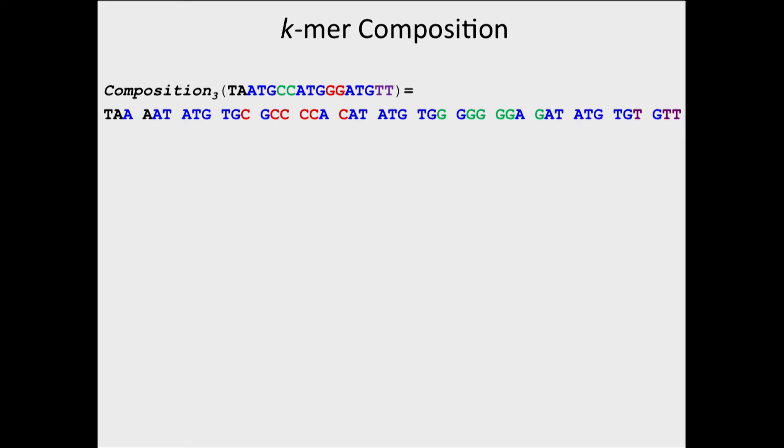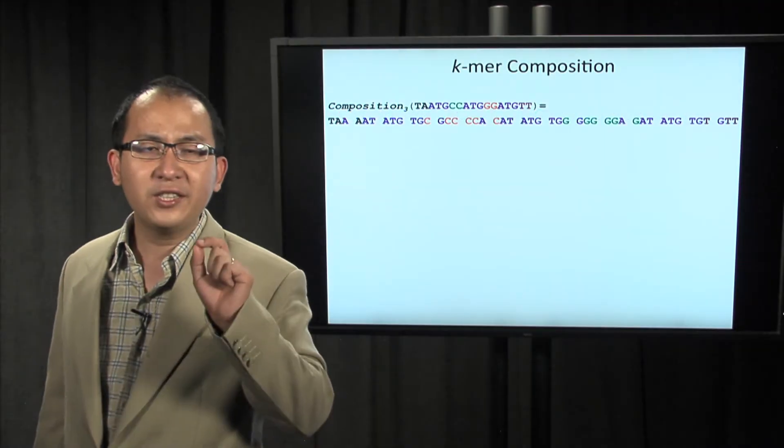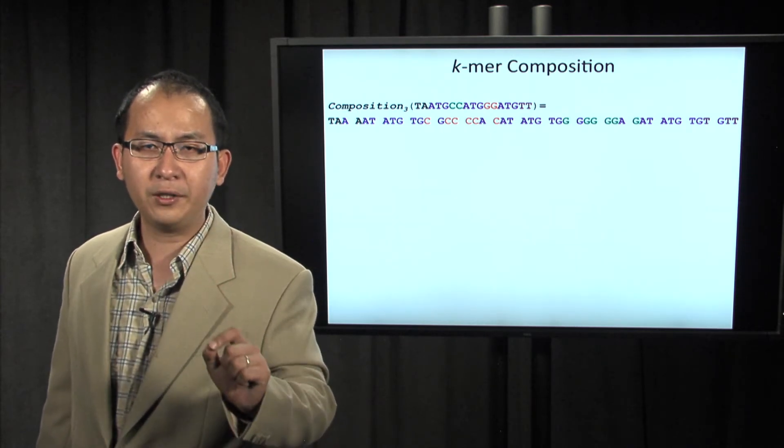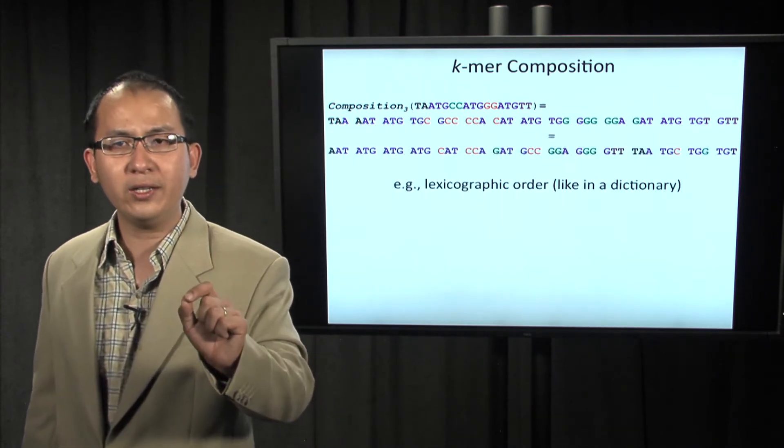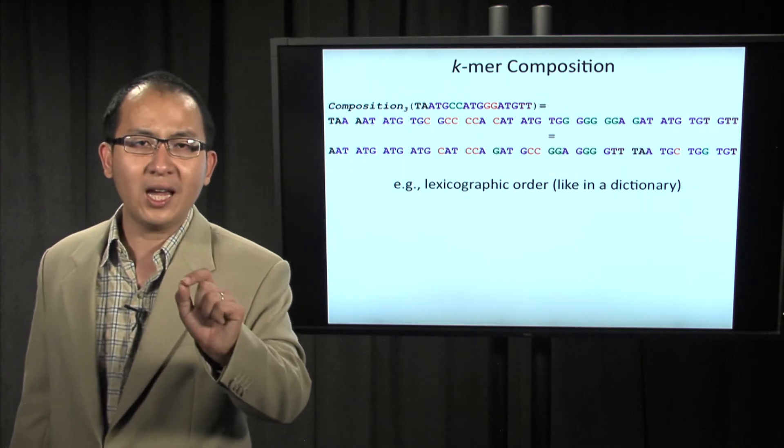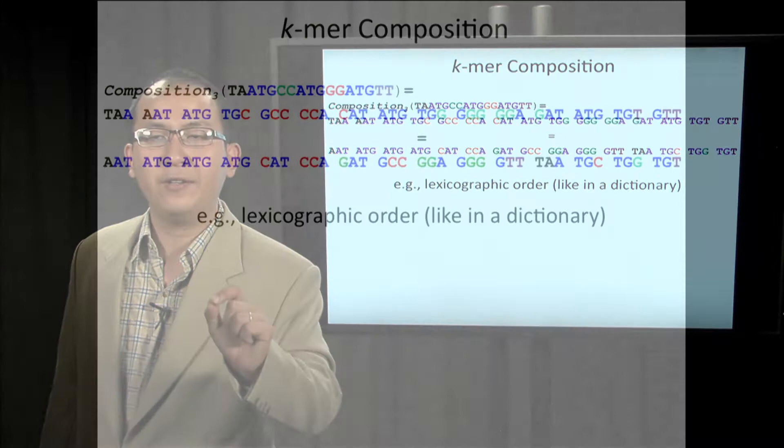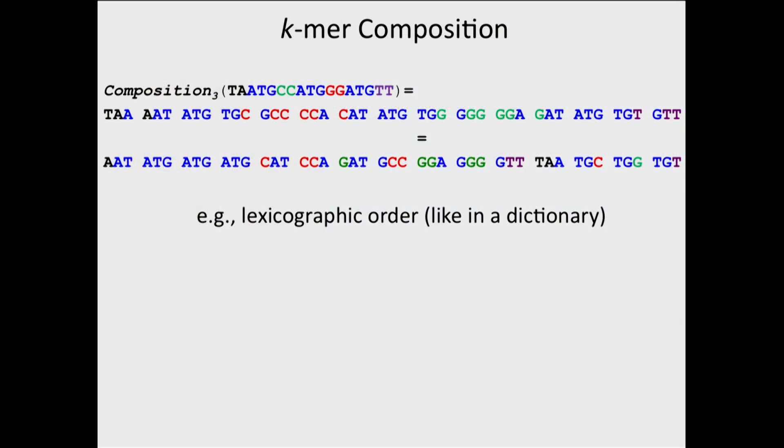So we can order the k-mers in this order according to the positions where they appear in the genome. But please note that the position information is not available. So a more correct way to order these k-mers is lexicographic order like in the dictionary.